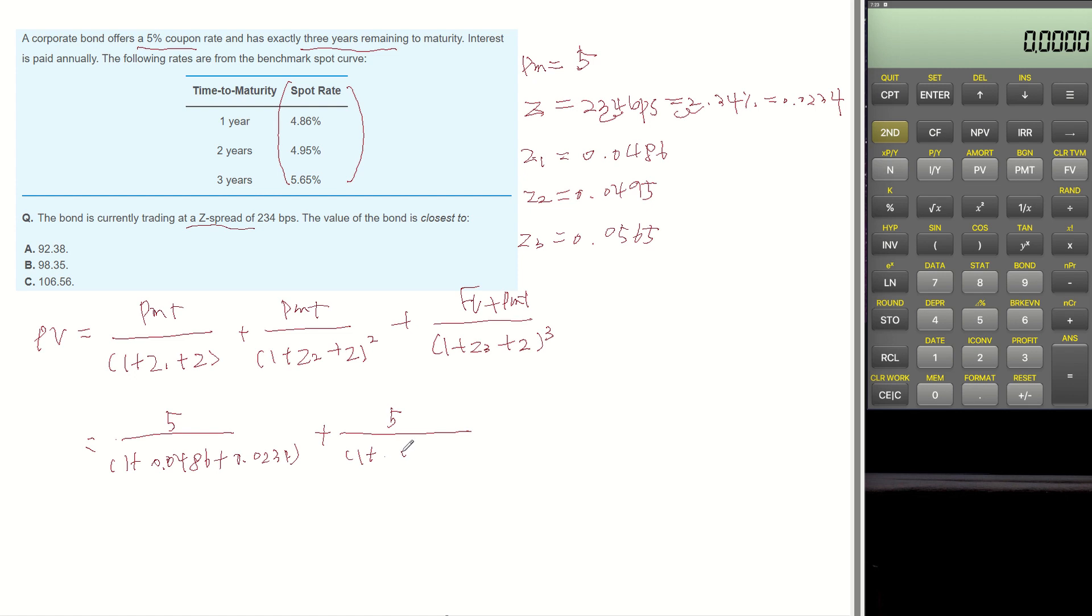plus for year 3, future value 100 plus payment 5, divided by (1 plus year 3 spot rate 0.0565 plus 0.0234) to the power of 3.